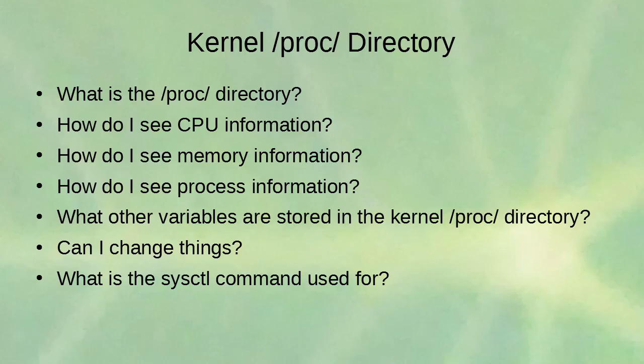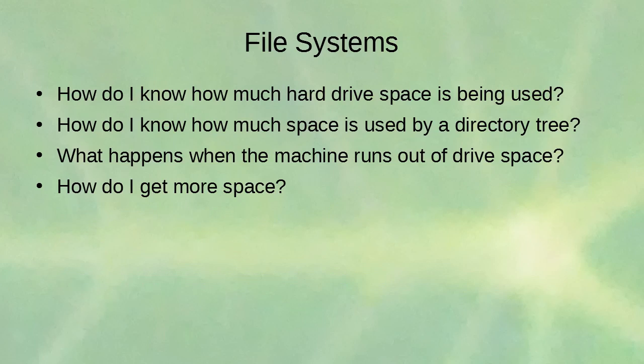Other variables stored in the kernel /proc directory can be changed using echo or the sysctl command — that's what the sysctl command is used for. Now for file systems: how do you know how much hard drive space is being used? And how do you know how much space is used in a specific directory?